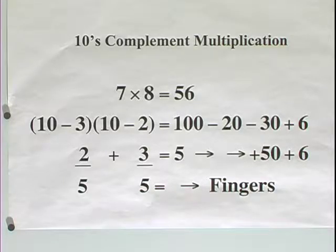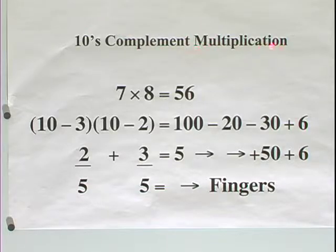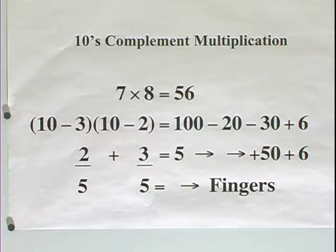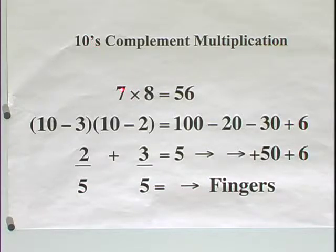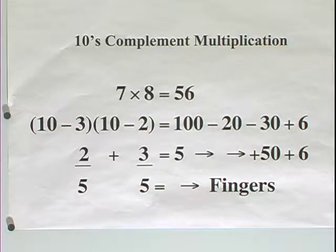In this clip, we will demonstrate why tens complement multiplication gives us an accurate result. We're going to multiply 7 times 8 and get 56. The tens complement of 7 is 3, the tens complement of 8 is 2. I'm going to write 7 as 10 minus 3 and 8 as 10 minus 2.